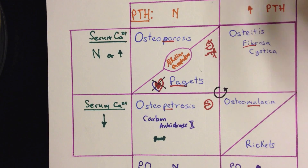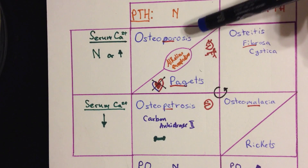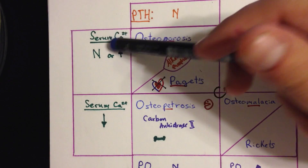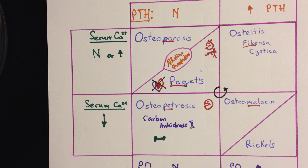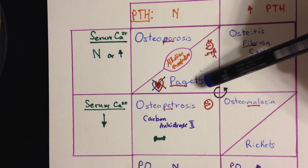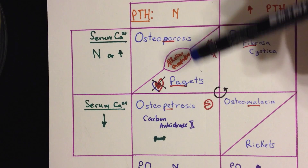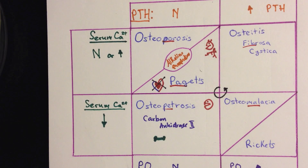Now, what do we compare osteoporosis to? An important disease to start with is Paget's. If we're considering the diagnosis of osteoporosis, all the lab values are probably normal. The only difference between osteoporosis and Paget's disease, in terms of lab values, is that in Paget's disease you have increased alkaline phosphatase — that's how you distinguish the two.